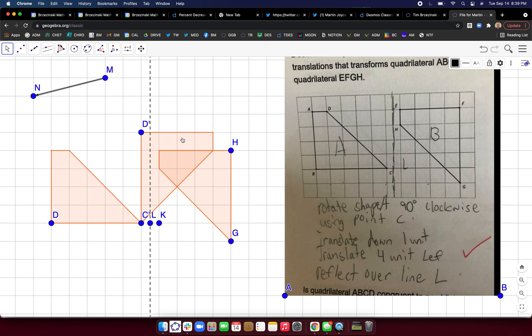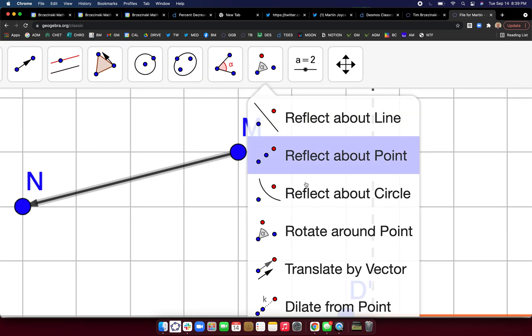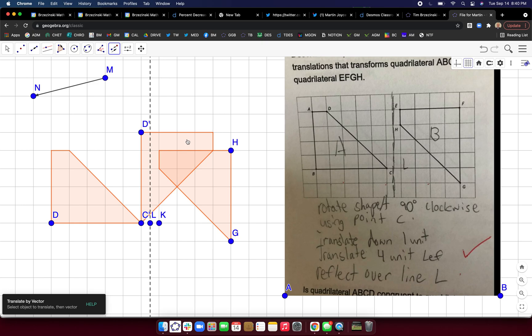So the student wants to translate this shape basically down one and four left. So I'm going to go to the transformational tools again. And we'll go to translate by vector. We'll take this new image, click on that and click on the vector. There's the next one.